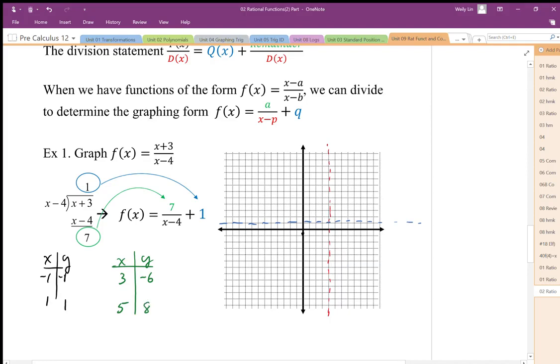So when I draw in these reference points, I go 1, 2, 3, down 6, 1, 2, 3, 4, 5, 6. So there's my point. I know that this graph is going to follow this asymptote through this expansion point. And through here,